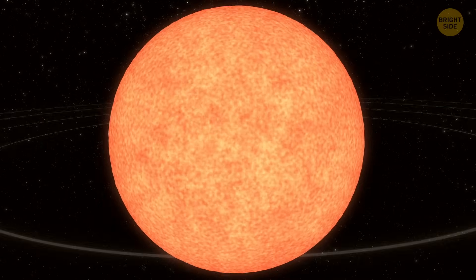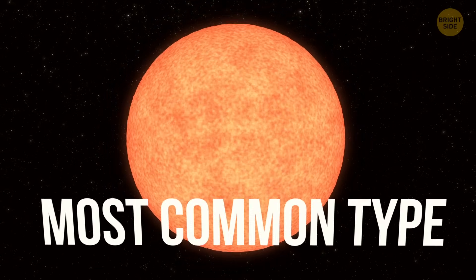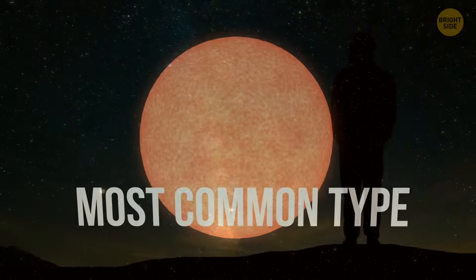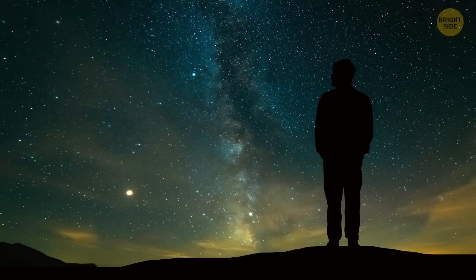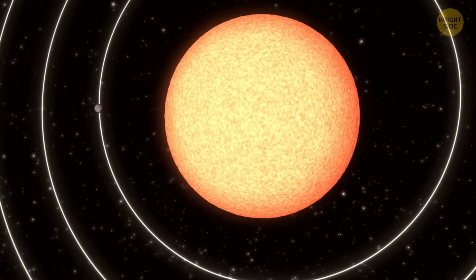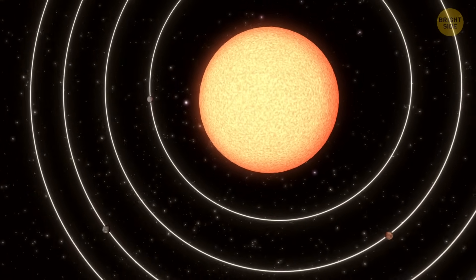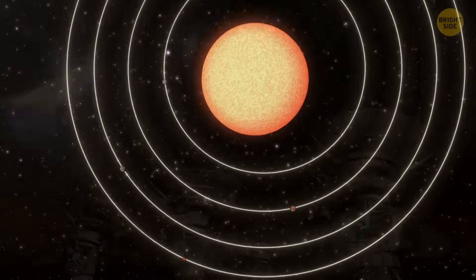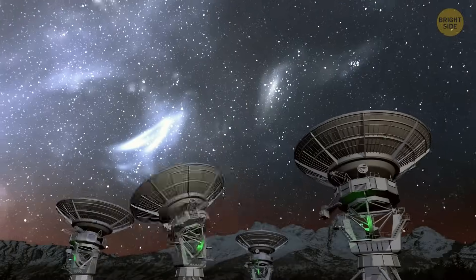Even though red dwarfs, like Barnard's star, are the most common type of star in the universe, most are way too far for us to see planets around them easily. These new findings suggest that small rocky planets could be pretty common around these stars, and that's huge for future discoveries.